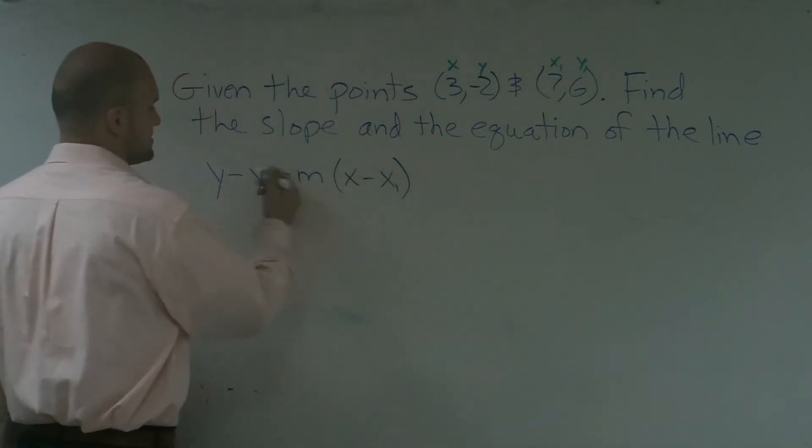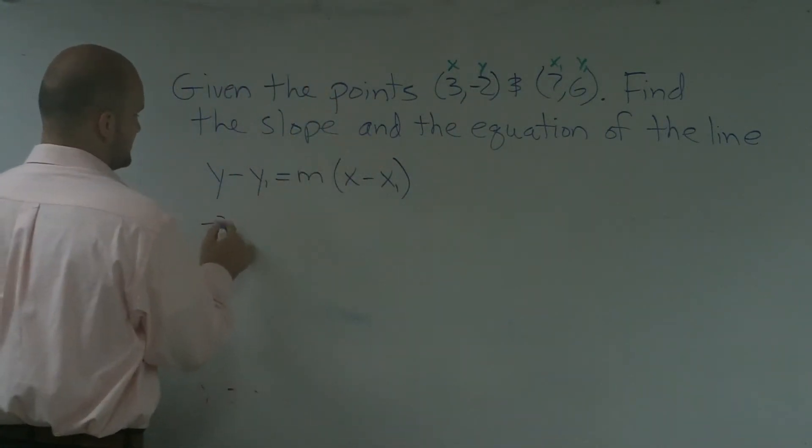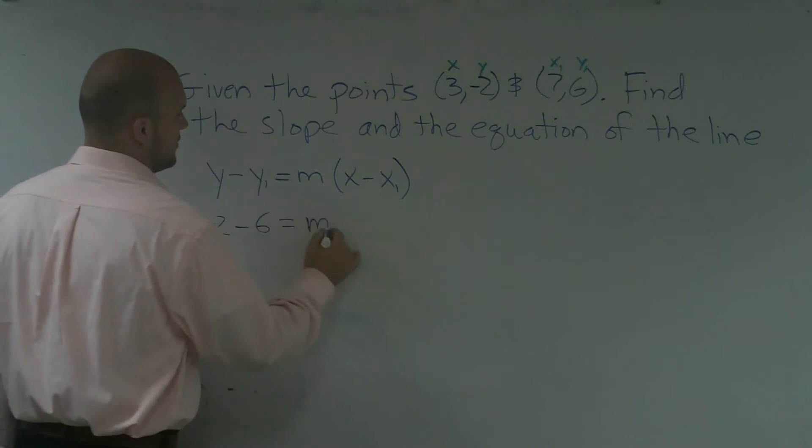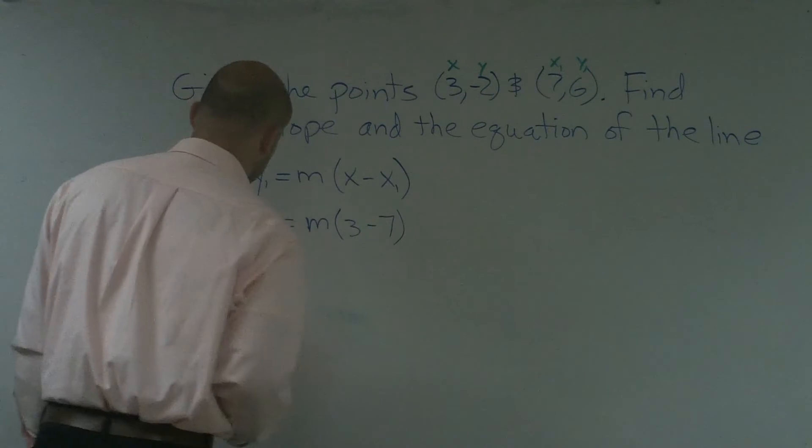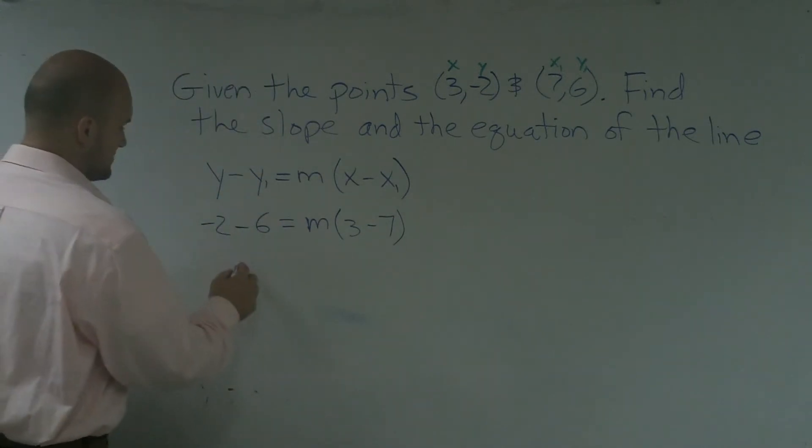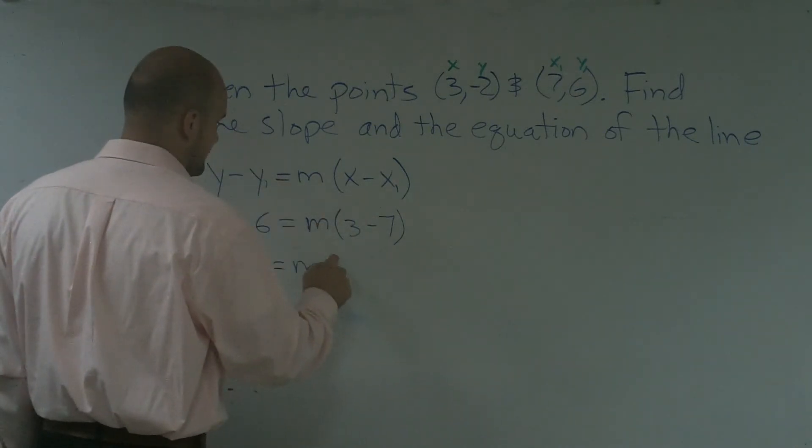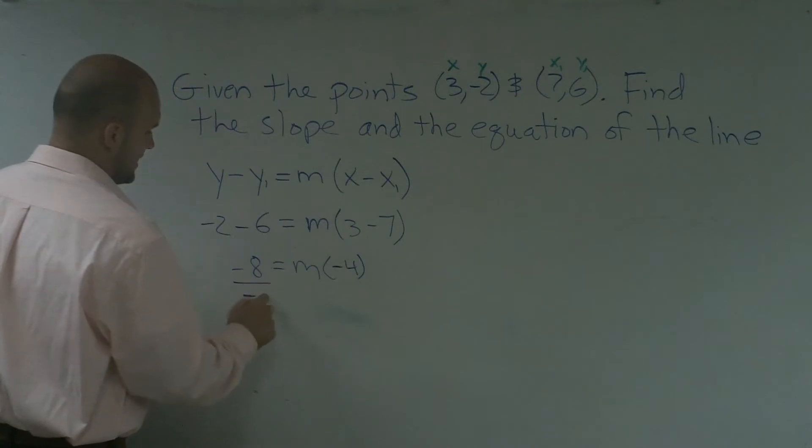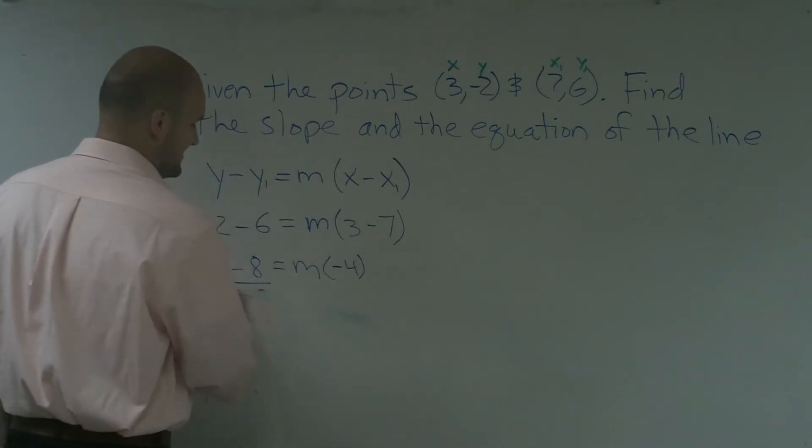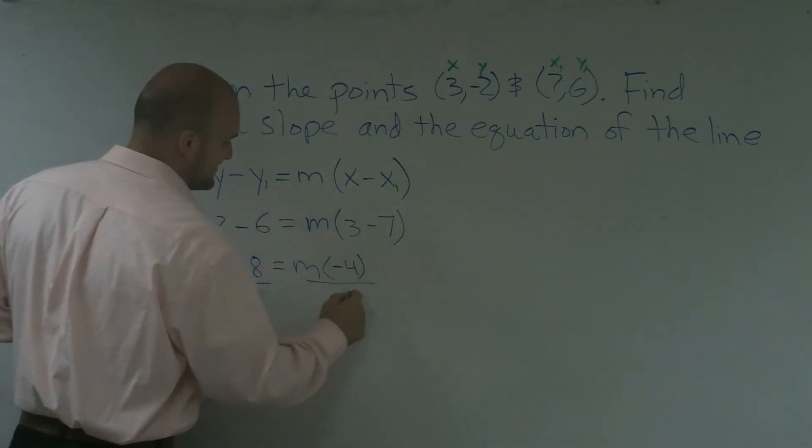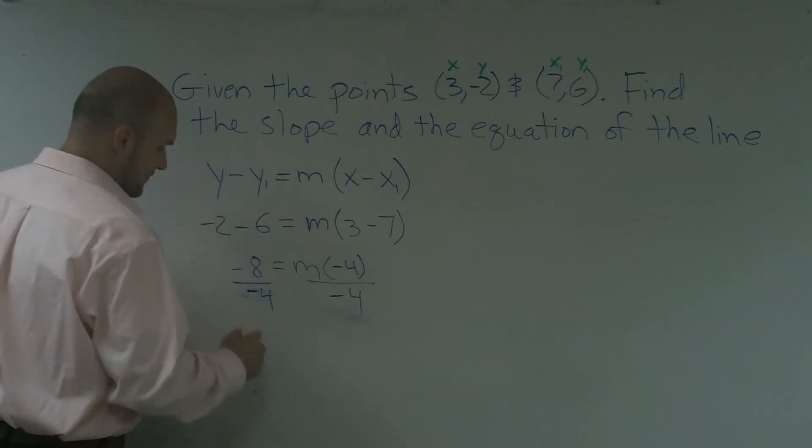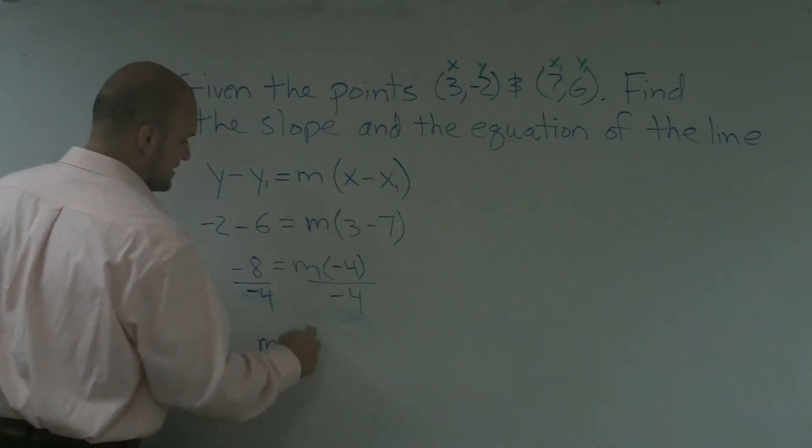So now I'm just going to plug them into my equation. So I have negative 2 minus 6 equals m, which I do not know yet, times my x, which is 3, minus 7. Negative 2 minus 6 is becoming negative 8, equals m, 3 minus 7 is going to become negative 4. Divide by negative 8. I'm sorry, what am I doing? You've got to solve for the m, so you're going to want to divide by negative 4. And then for m, it's going to equal a positive 1 half.